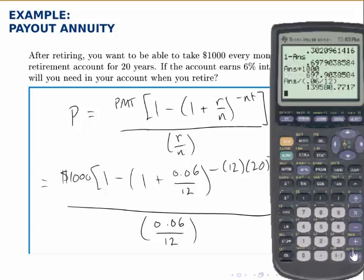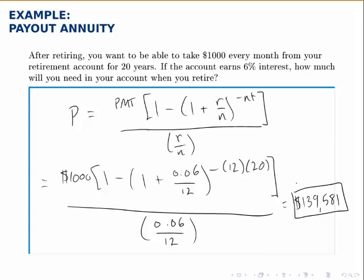The final answer is $139,580.77. So what that means is if you want to take out a thousand dollars each month for 20 years, your account needs to hold $139,581 at the moment of retirement, and that's if your account earns 6% interest.